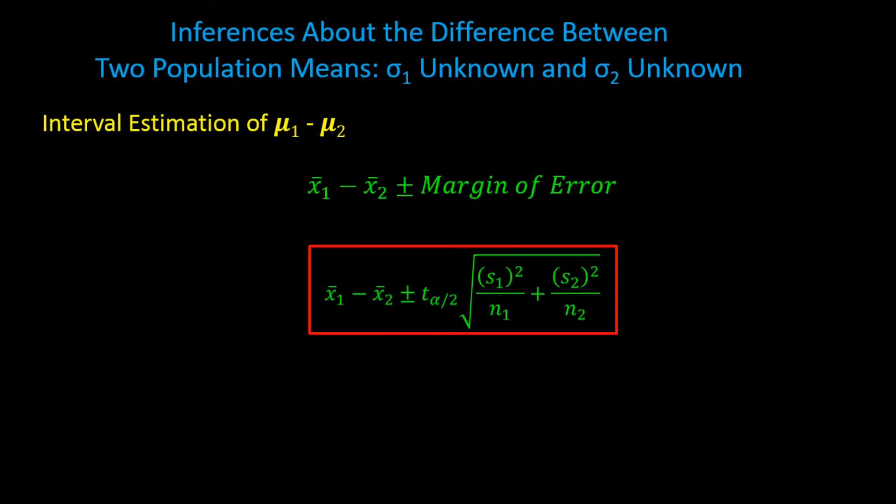This formula should look familiar. We had a similar formula for the case of sigma known, but here we have a t-value we need to look up in the t-table instead of the z-table, and we are using s instead of sigma since the standard deviation comes from the sample and not known from the population.